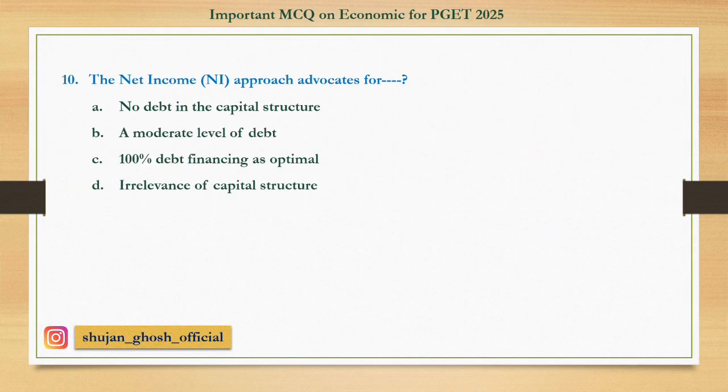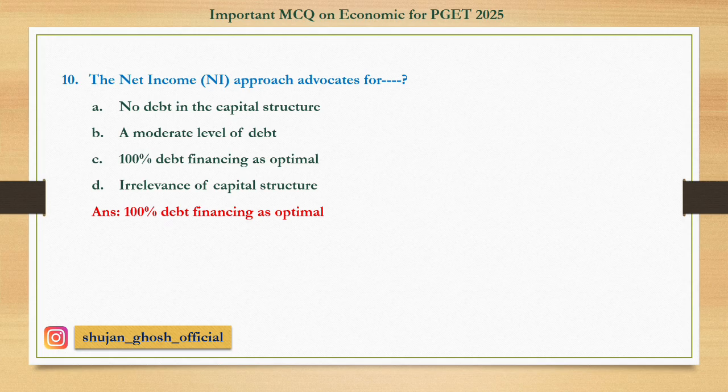Question number ten: The net income approach advocates for — option A: no debt in the capital structure. B: a moderate level of debt. C: 100% debt financing as optimal. D: irrelevance of capital structure. The net income approach says that financing through debt is very essential for a firm to increase its value. Answer: 100% debt financing as optimal.